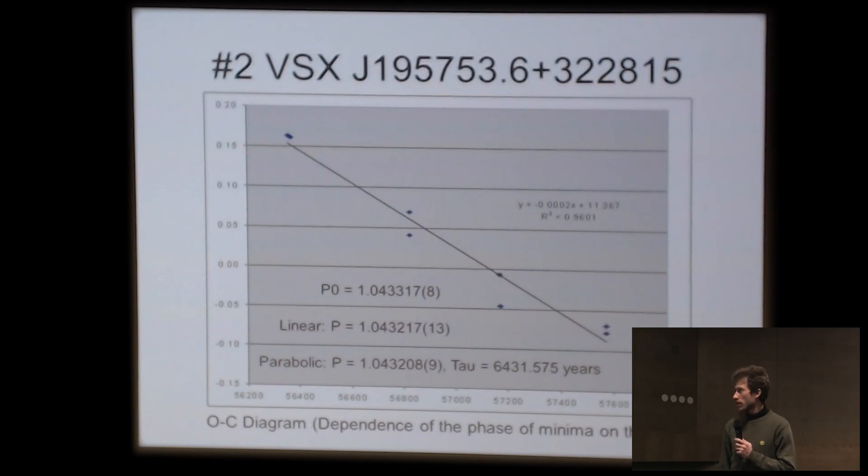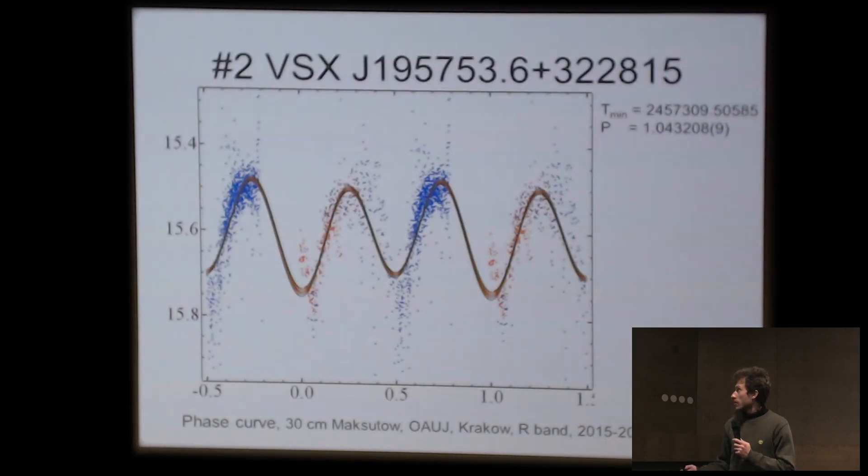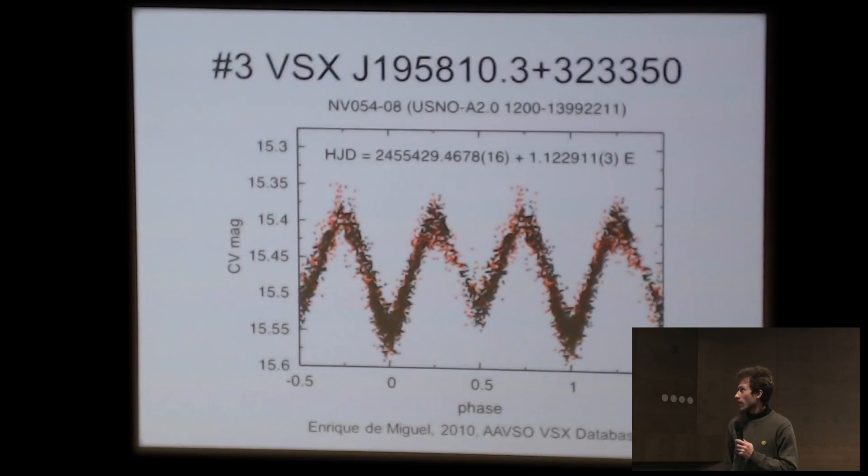This is technically the same. We have some trend and we can improve the value of the period. But also here is possible some parabolic trend, but it's too early to talk about this because a few more years is necessary to see it. This is the light curve of this object.